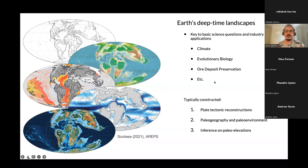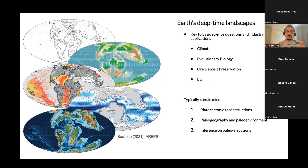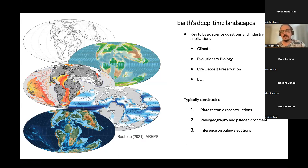Starting with a bit of background: Earth's deep time landscapes are really important to constrain because they're key inputs to paleoclimate models, ocean and atmospheric circulation. Evolutionary biologists love these models for understanding biogeographic dispersal of plants and animals, and for industry they're useful for understanding where ore deposits might form and whether they're preserved — too much erosion and you might be destroying that ore deposit.